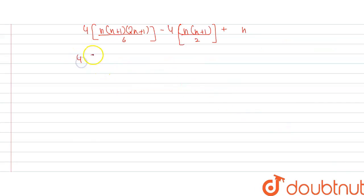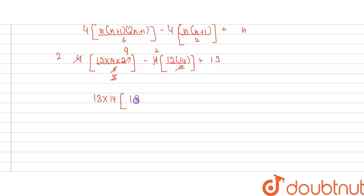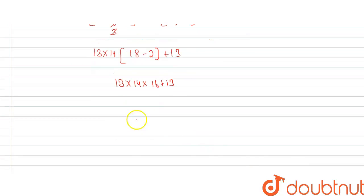Substituting n = 13: we get 4 × (13 × 14 × 27)/6 minus 4 × (13 × 14)/2 plus 13. Simplifying, we take 13 × 14 common from the first two terms. The bracket becomes 4 × 9 × 2 − 2 × 2 = 18 − 2 = 16. So the expression becomes 13 × 14 × 16 + 13.